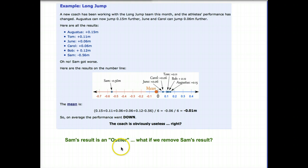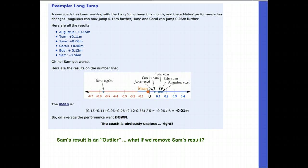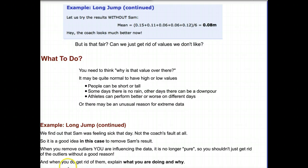Well, this is why we have to examine outliers. Sam's result is an outlier. So let's consider what if we remove Sam's results. So continuing on with the long jump, if we take out Sam because he's clearly an anomaly, we can calculate a new mean of 0.08 meters. So there we have it. As a whole now, everything looks great. The coach is much better than he looked before. But really, is that fair? Can we just get rid of values we don't like in order to improve our averages?